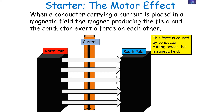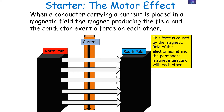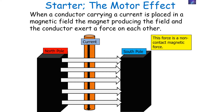When a conductor carrying a current is placed in a magnetic field, the magnet producing the field and the conductor exert a force on each other. This force is caused by the conductor cutting across the magnetic field of the permanent magnet — caused by the magnetic field of the electromagnet and the magnetic field of the permanent magnet interacting with each other. This force is a non-contact magnetic force, and its direction can be determined by Fleming's left-hand rule.